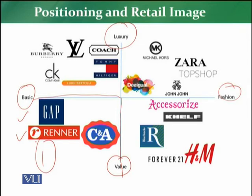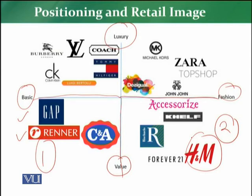In the other quadrant, we have retailers who offer fashion and value to the customer. H&M is one of the most famous examples — they offer fashion but also offer value to the customer. So their positioning in the minds of the customer is that they are a fashion brand that also delivers value, and the customer carries this image accordingly.